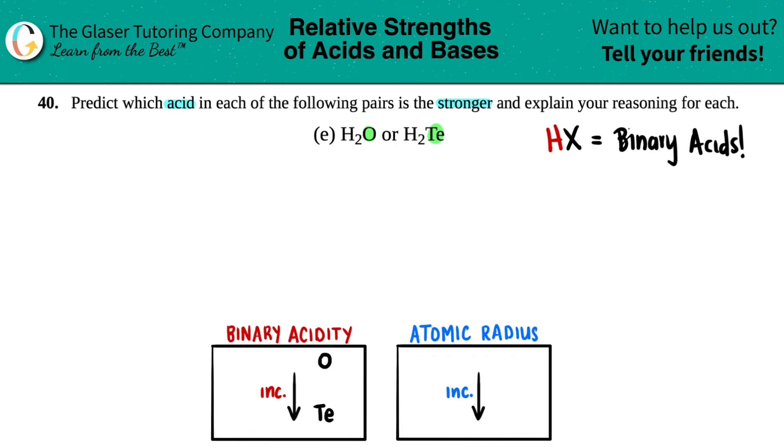And as you go down, Te is in the same group but downward. So as you go down, you get more acidic. Tellurium would be more acidic than oxygen if it's in a binary acid.